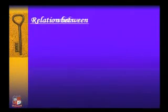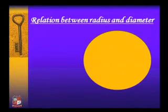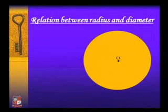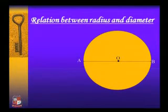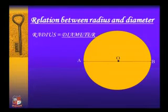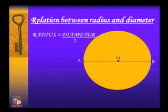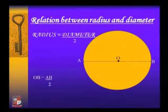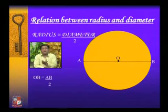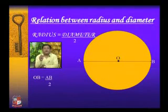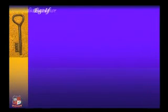Now we define the relation between radius and diameter. We draw one circle with center O and take points A and B on the circle. Diameter is equal to 2 times the radius, or equivalently, radius is equal to diameter divided by 2. Here OB and OA are both radii, and AB is the diameter. So OA = AB / 2.